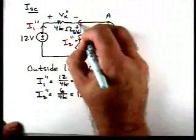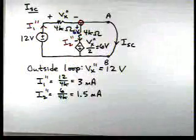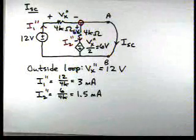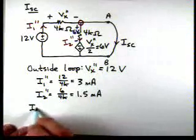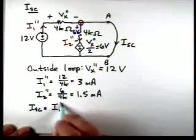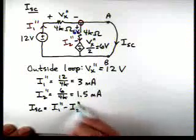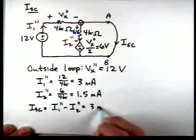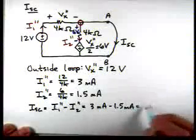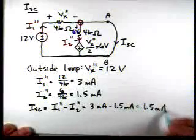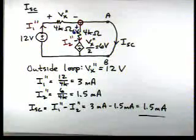Now, if we apply Kirchhoff's current law at the node at the top, we'll get that I short circuit is equal to I1 double prime minus I2 double prime. So we have 3 milliamps minus 1.5 milliamps to give us 1.5 milliamps. So now there's the short circuit current. So now,